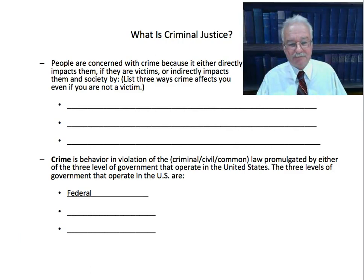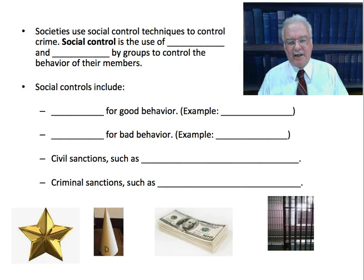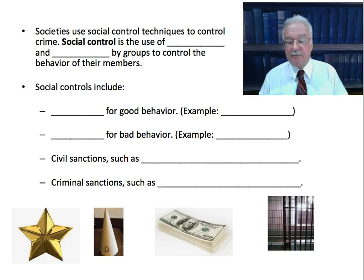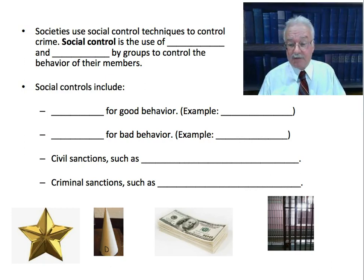Let's talk about how societies control people's behavior. Societies use social control techniques to control crime. Social control is the use of sanctions — which are bad things — and rewards — which are good things — by groups to control the behavior of their members. This is not unique to governments; all groups control their members by rewarding good behavior and punishing bad behavior. Let's begin by talking about rewards for good behavior — a non-criminal justice system reward.